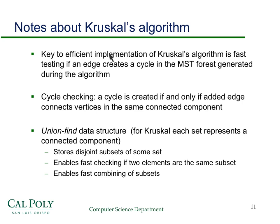The key to efficient Kruskal implementation is a fast way to test if an edge creates a cycle (i.e., whether its vertices are in the same connected component) and to union two trees. The data structure used is called a union-find structure, optimized for exactly those two operations. More generally, it stores disjoint subsets and supports fast find and union. That concludes these greedy algorithms — future screencasts will cover how to prove Prim's algorithm is correct.